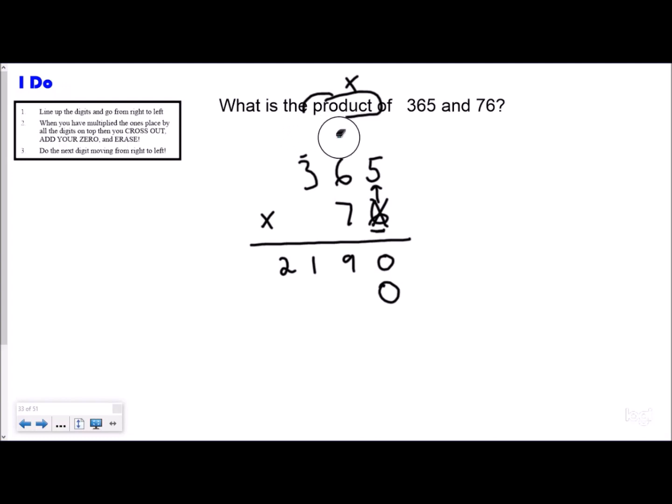Now we're multiplying 7 by 365 up top, again going from right to left, but we know this is really a 70 so we have to put our zero here. Because 7 times 5 is 35, but really it's 70 times 5 which makes it 350, so we have to put our zero right here.